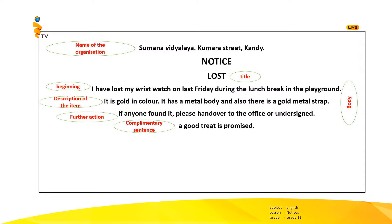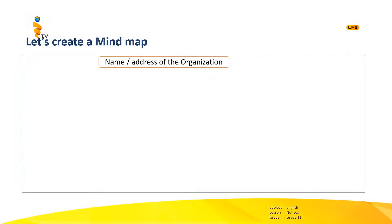So all together we can say that is the body of the notice. Under the body we have to put the date and we have to sign — the name and the designation of the person who wrote the notice. Now let's try to create a mind map for easy remembrance of the format of the lost notice. What should come first? Name and address of the organisation. Next, the word 'Notice'. Then the topic should be there. Then what should come next? The body.